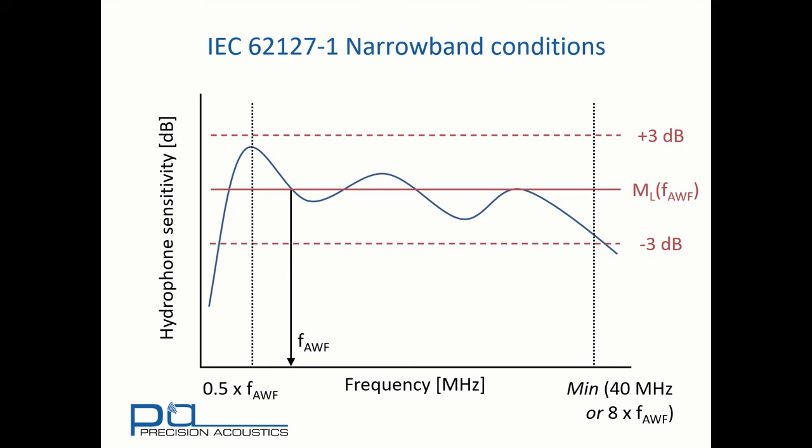The narrowband condition requires that within the frequency range from half of the acoustic working frequency to the minimum of 40 MHz or 8 times the acoustic working frequency, there is no more than plus or minus 3 dB variation in the hydrophone's response, where the zero reference point is taken as the sensitivity at the acoustic working frequency.